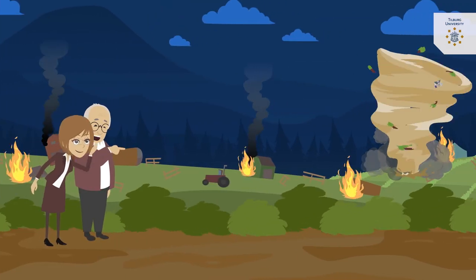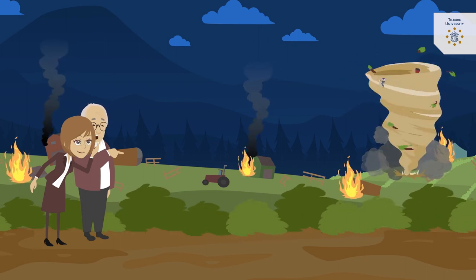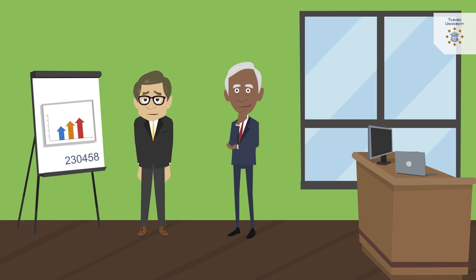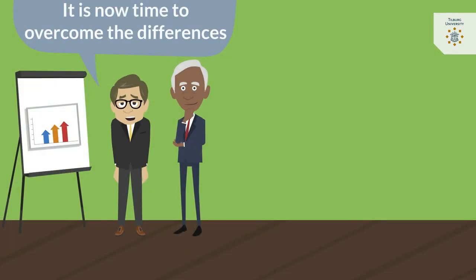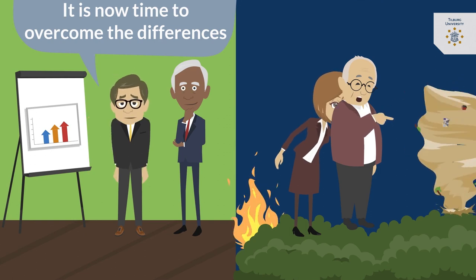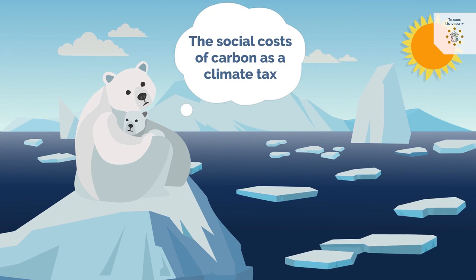Not all economists agree. Some believe that damages are much larger because ecosystems will suffer and these do not receive enough weight in the estimates. Other economists say that we should use a larger or smaller interest rate. They quarrel about the numbers. The fossil fuel industry has smartly used the disagreement to push back the call for climate policy. It is now time to overcome the differences. Almost all economists agree it is time that fossil fuels pay for the damages they cause. We need the social cost of carbon as a climate tax because we need to stop climate change.